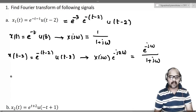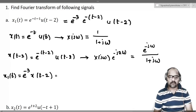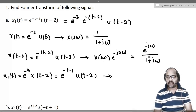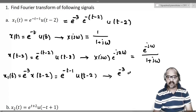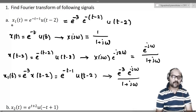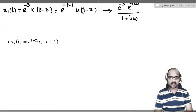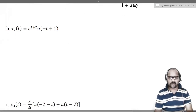But we don't want x(t-2) — we want x1(t). Finally, x1(t) = e^(-3) · x(t-2) = e^(-(t-1)) u(t-2). So x1(t) will have Fourier transform equal to e^(-3) · e^(-j2ω) divided by (1+jω). That is the Fourier transform of x1(t).